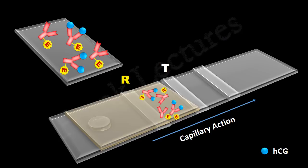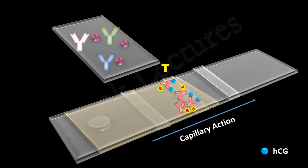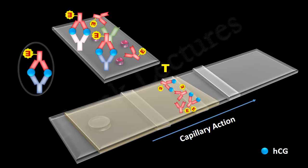Note that HCG-bound enzyme-conjugated antibodies and unbound enzyme-conjugated antibodies are moving towards the test zone along with the urine. In the test zone, polyclonal anti-HCG antibodies are present. These antibodies bind to the HCG molecules of the HCG-enzyme-conjugated antibody complexes. HCG is now sandwiched between the antibody of the reaction zone and the antibody of the test zone. Since the antibodies of the test zone are fixed, the sandwich complexes formed do not move further along with the urine.